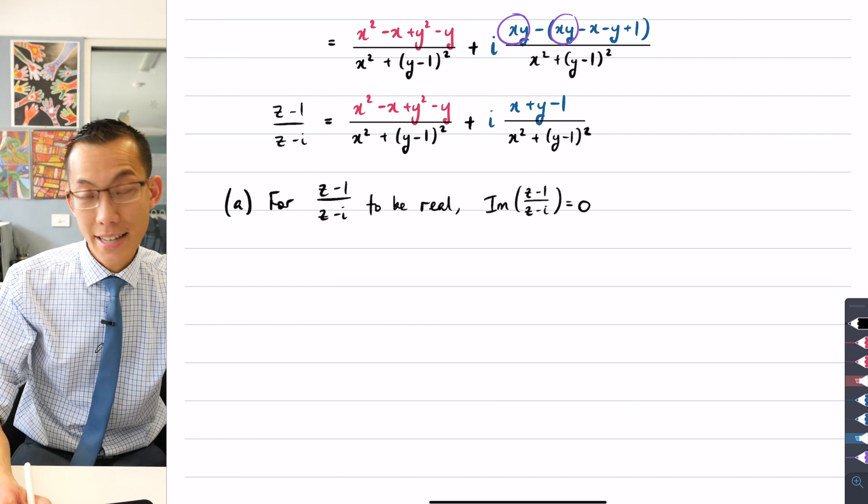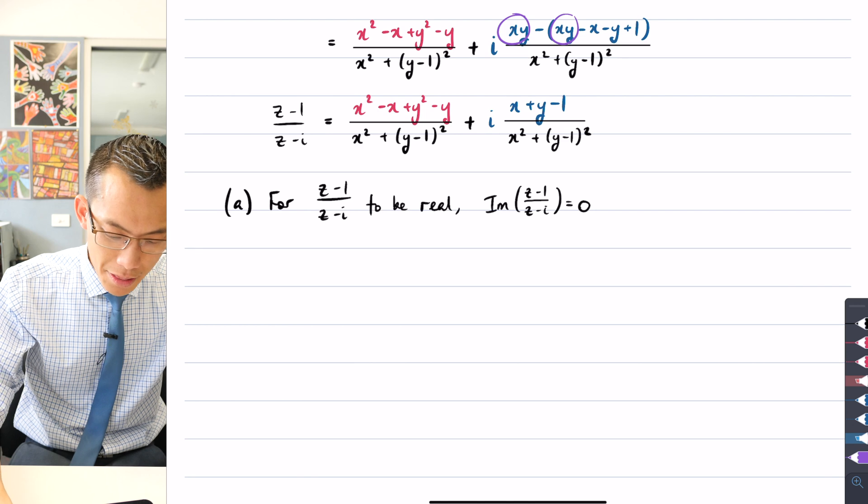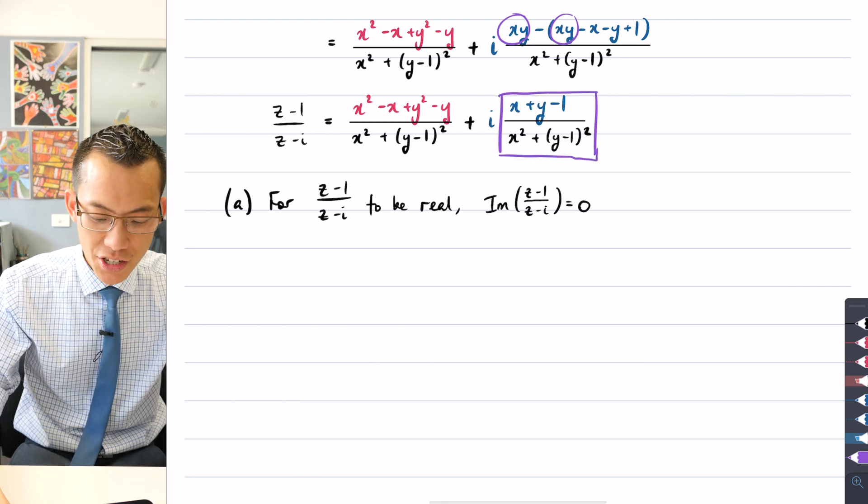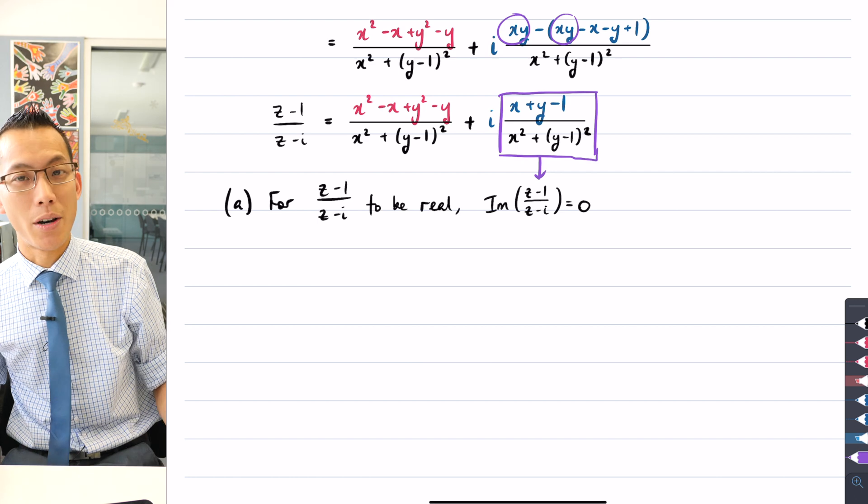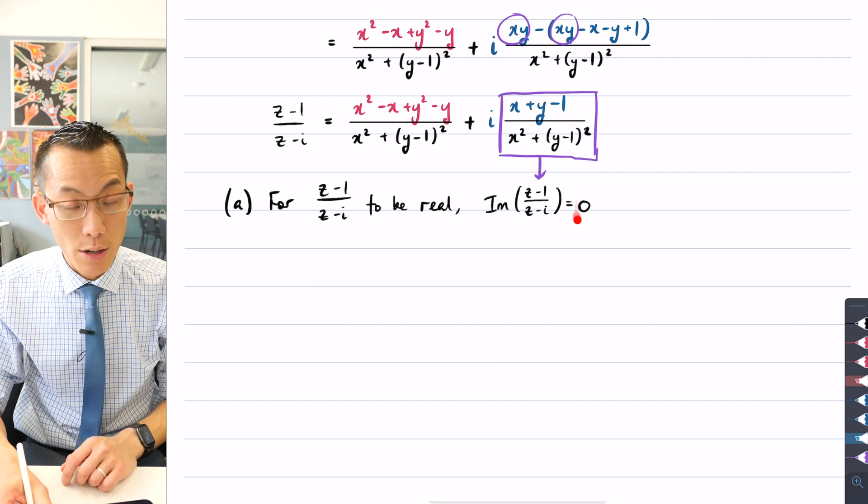Now I can see, because I separated out in the previous part of the question, this right here, this is the imaginary part of z minus 1 over z minus i, so all I need to do is solve for this thing being equal to zero.